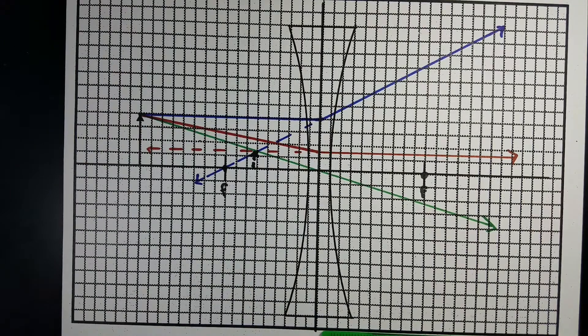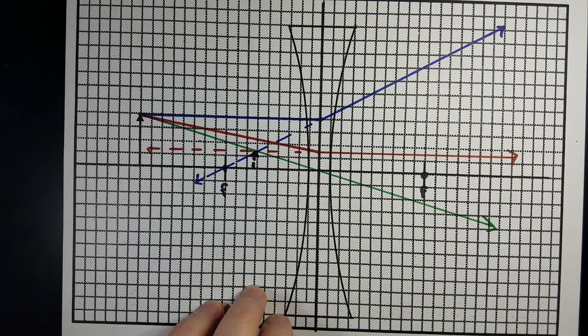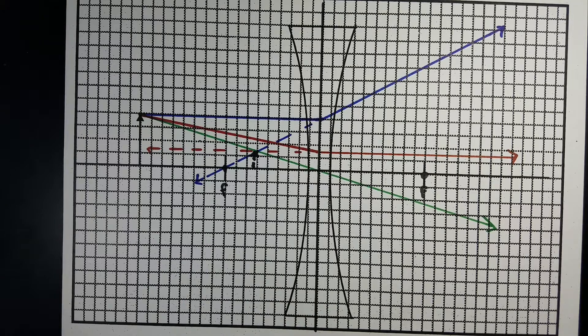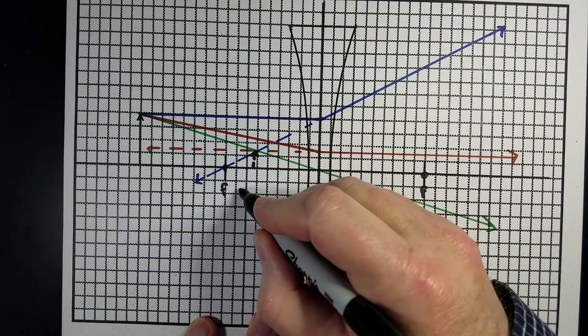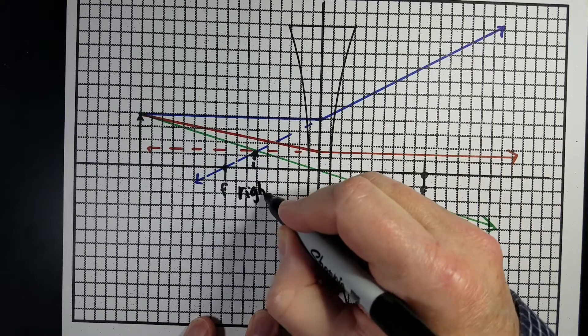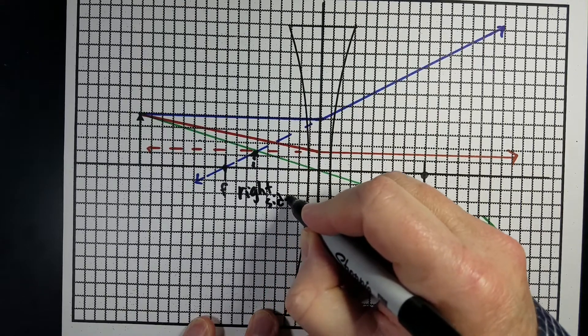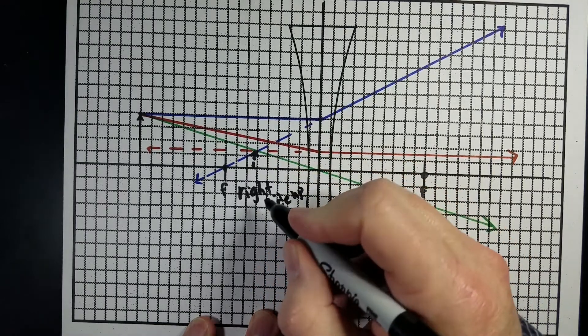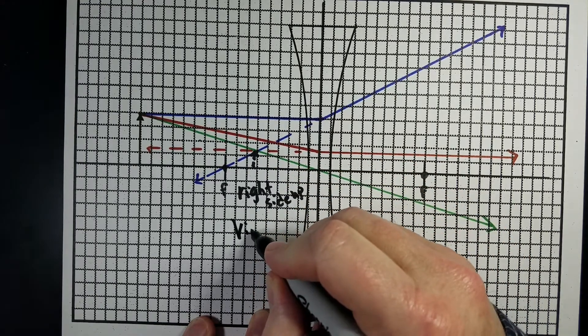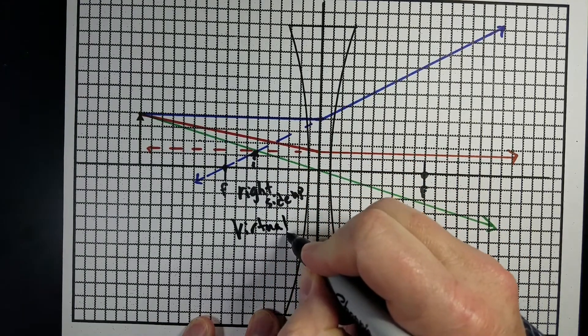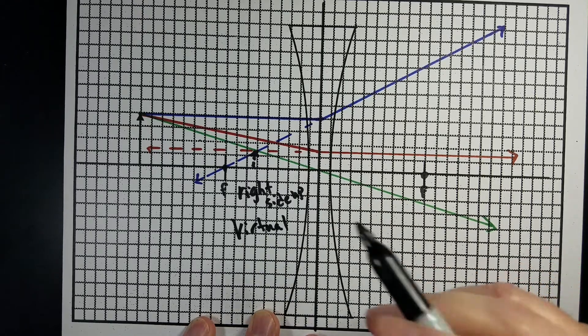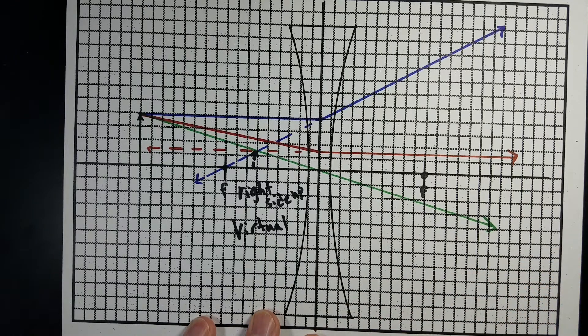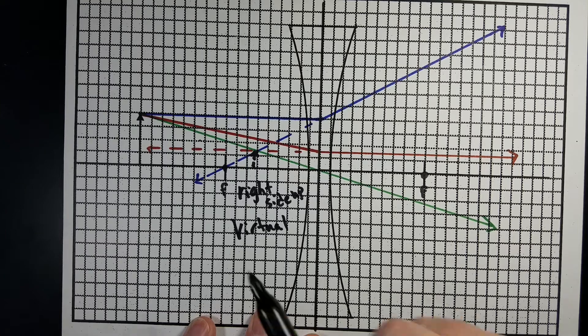So that image, since all these rays came from the top, they formed the top. So it's right side up. It is virtual, and it also is smaller than the original one, or the original object.